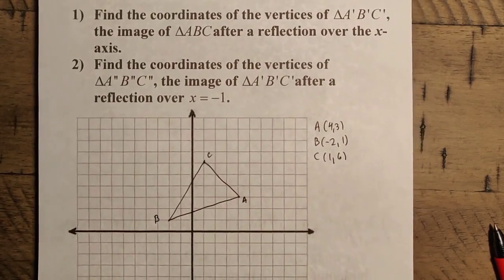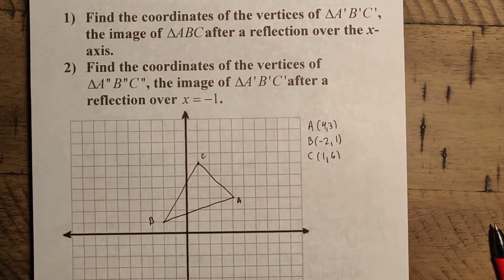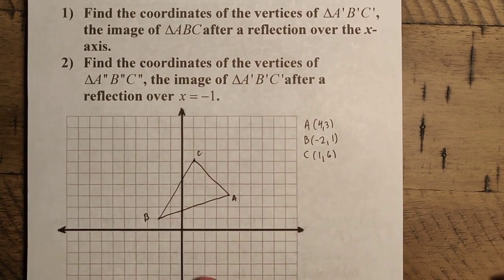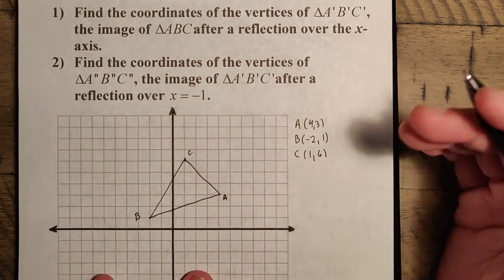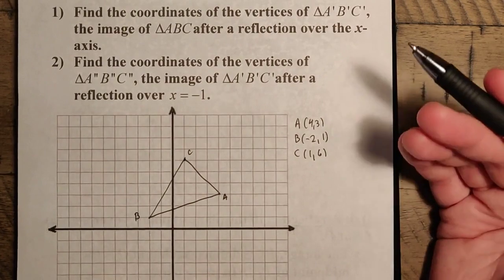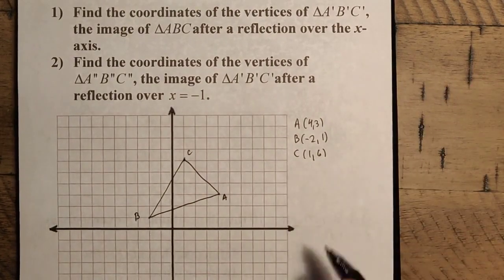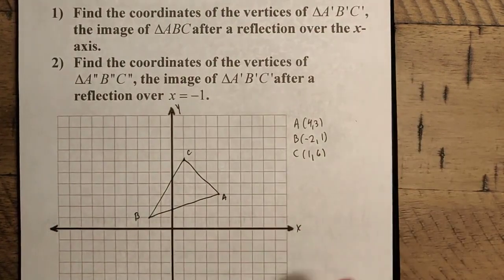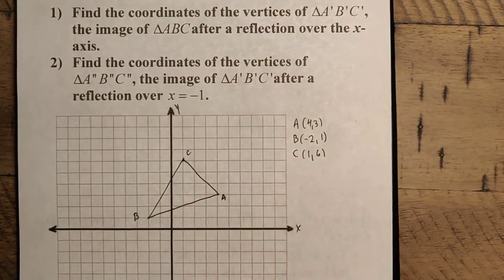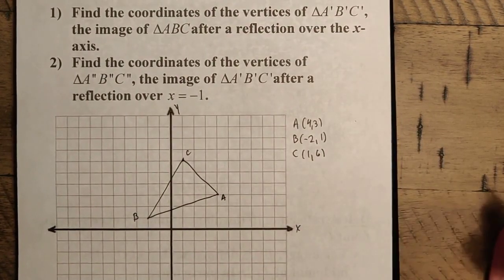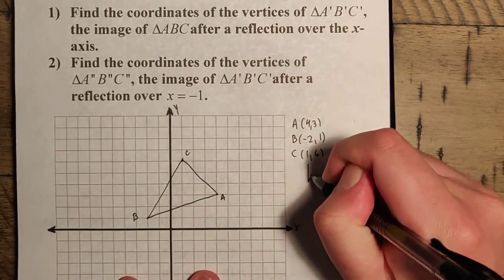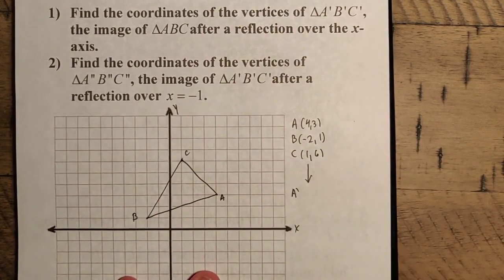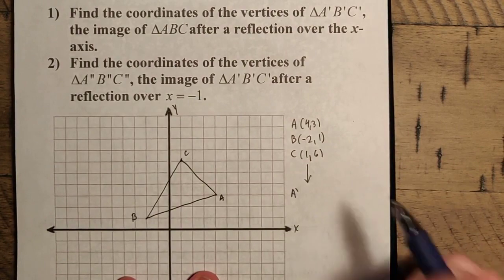The first thing we're going to do is find the coordinates of A'B'C', the image of A, B, C after a reflection over the x-axis. Reflection over the x-axis is pretty straightforward. Given the x and y-axes, when we reflect over the x-axis, the y-coordinate flips but the x-coordinate remains the same.